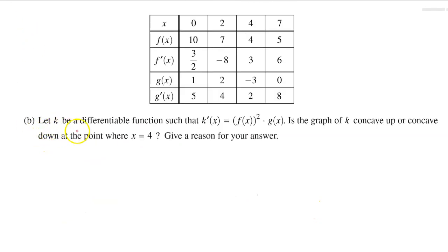Part b. Let k be a differentiable function such that k prime equals f of x squared times g of x. Is the graph of k concave up or concave down at the point where x equals 4? Give a reason for your answer.